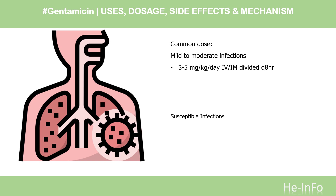Dose. Susceptible infections. In underweight and non-obese patients, use of total body weight (TBW) instead of ideal body weight for determining initial mg/kg/dose is accepted. Ideal body weight (IBW) also may be used to determine doses for patients who are neither underweight nor obese. Conventional dosing: 3–5 mg/kg/day IV/IM divided Q8HR. Extended dosing interval — Initial: 5–7 mg/kg/dose Q24H.